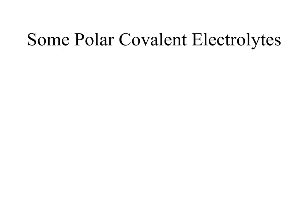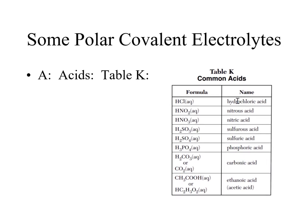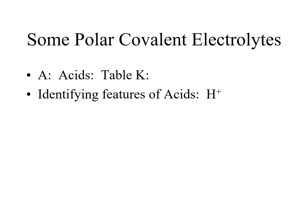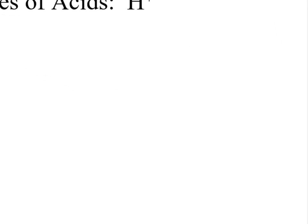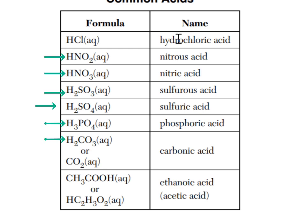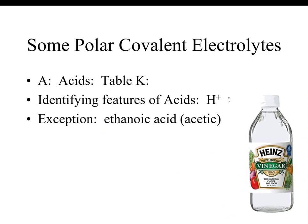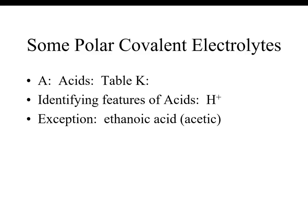Polar covalent electrolytes are mainly acids, found on Table K in your reference table. The main identifying feature of all acids is they almost all have a positive hydrogen ion, and when they dissociate, they release that hydrogen ion — recognizable as the first element in each acid on Table K. The exception is ethanoic acid, also known as acetic acid or vinegar; it still releases hydrogen, but the way it's written, that hydrogen is not shown at the front of the molecule, as you can see on Table K.